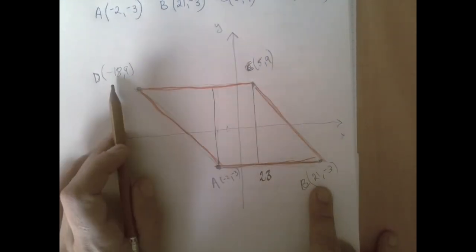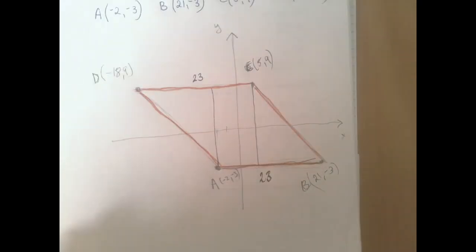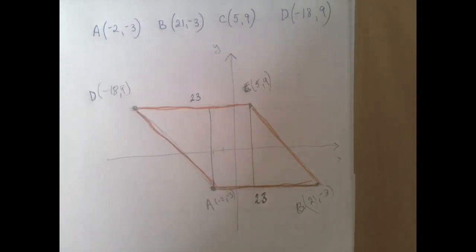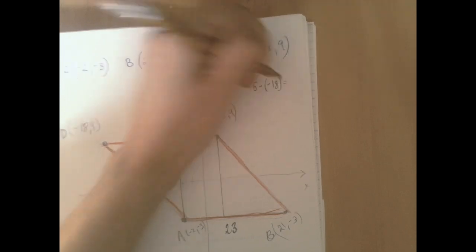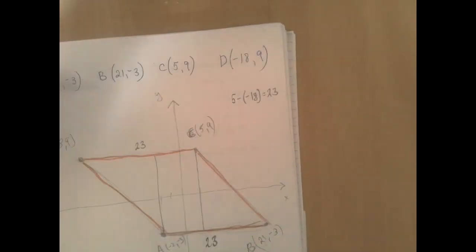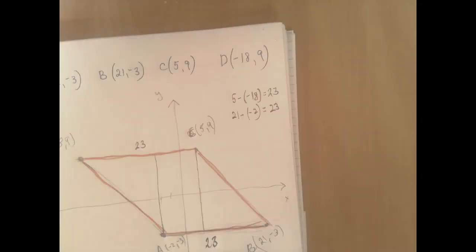Indeed, 5 minus negative 18 is 23. So the distance between two points that are horizontal like this is you just take the x-coordinates and subtract. 5 minus negative 18 is 23, and 21 minus negative 2 is also 23.